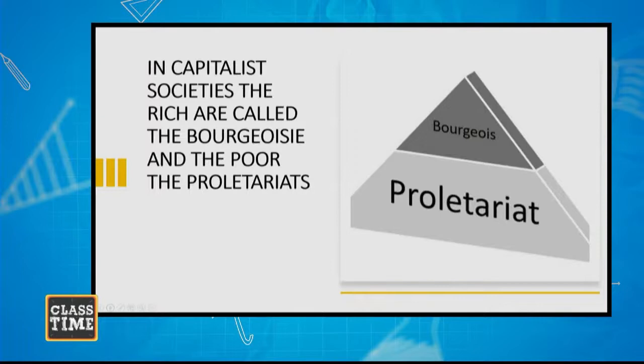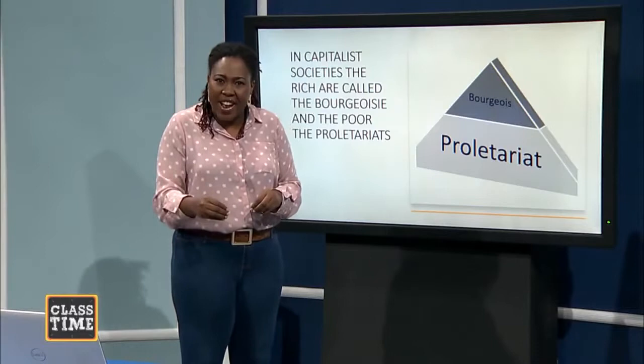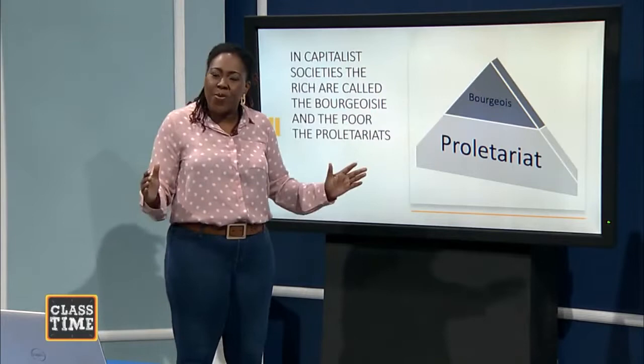The rich are called the bourgeois and the poor are called the proletariats. You have to say bourgeois now because you're an advanced level student — it's spelled bourgeoisie but pronounced bourgeois. So in the capitalist society, the rich are the bourgeois and the poor are called the proletariats. Small rich group: bourgeois. Large poor group: proletariats.